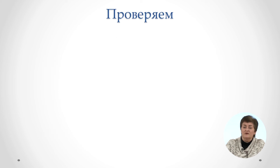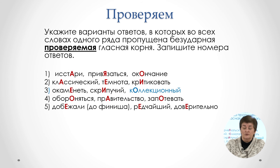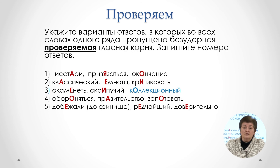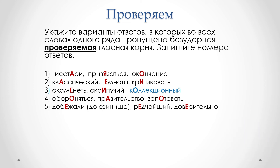Обязательно проверим. Почему это важно? Задание направлено не на количество цифр в ответе, а на качество — наша задача найти правильный ответ. При проверке мы обнаруживаем, что действительно только третий ряд не может быть ответом на вопрос. Мы поработали с двумя группами гласных в корне: чередующейся и проверяемой.